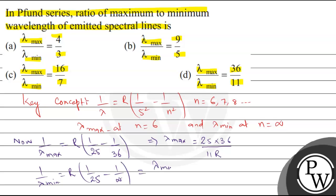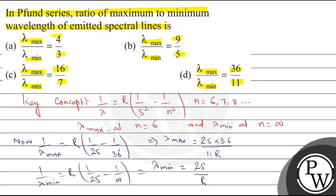And now we have lambda max upon lambda minimum. Lambda max equals 25 times 36 upon 11 R, upon lambda minimum that is 25 upon R.